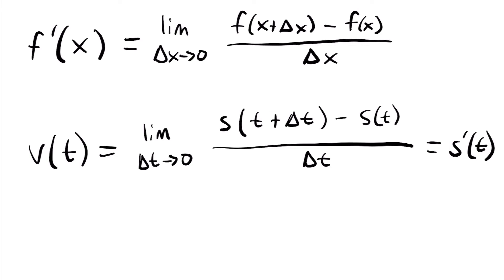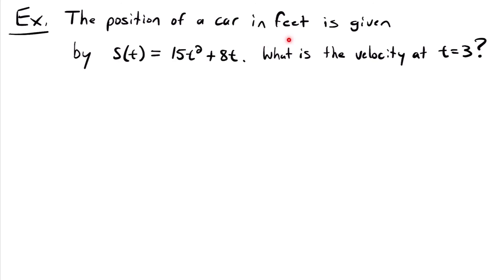Now let's look at an example where we actually take the derivative. The position of a car in feet is given by the position function 15t squared plus 8t. We want to know the velocity at time equals 3. This is asking for the instantaneous velocity at time equals 3. If you're asked for velocity at a single point in time rather than an interval, you know you're looking at instantaneous velocity, which means you'll use a derivative.